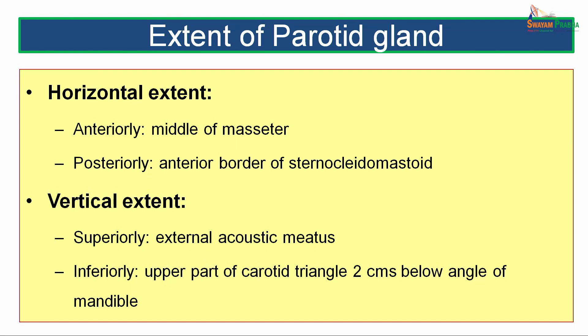Vertical extent of the gland: superiorly it extends up to the external acoustic meatus, whereas inferiorly the extent is up to the upper part of the carotid triangle, two centimeters below the angle of the mandible.